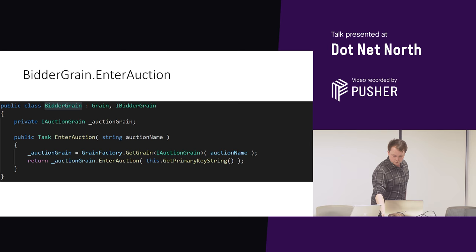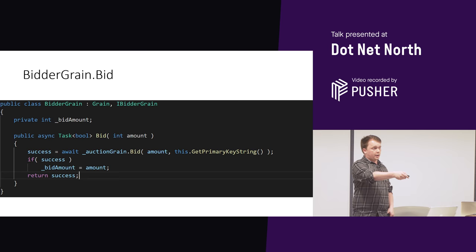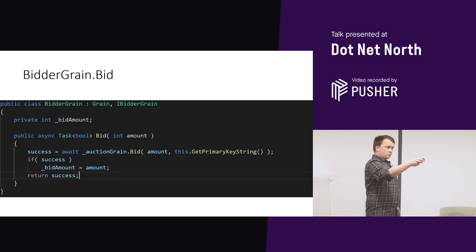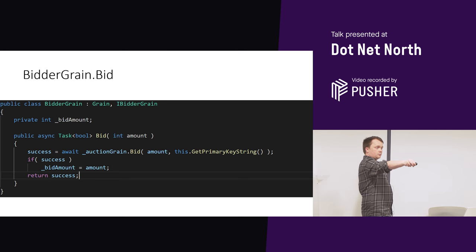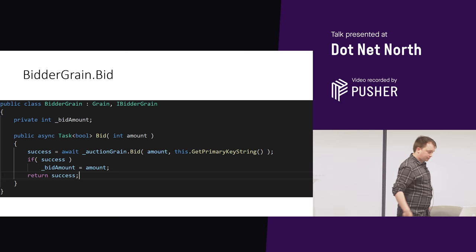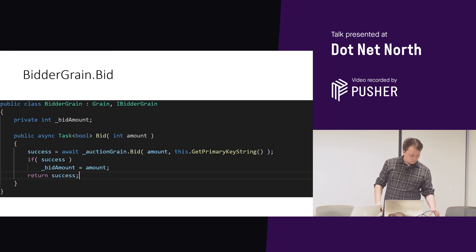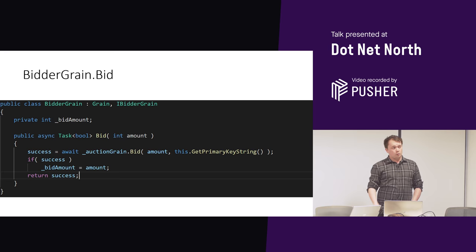Now we've got our Bid method. We created our auction grain before and attached it. We're going to say: auction grain, I'm bidding this amount. This could be an API, a web app, a mobile app that has pushed in and said go bid this amount. I say to the auction grain: I'm going to bid this amount, and it's going to tell me if I'm successful. And if I'm successful, I know to set that as my bid amount, then return back to whatever is calling me to say yes you were successful or no you weren't, so they can try again or give up.